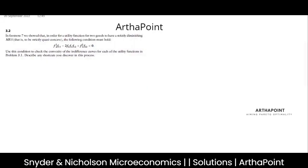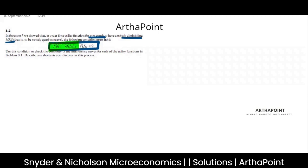This is question number two from Snyder and Nicholson, Chapter 3. In the footnote, it says that in order for a utility function of two goods to have strictly diminishing MRS, the following condition must hold. Use this condition to check the convexity of the indifference curve for each of the utility functions described in problem 3.1, and describe any shortcuts you discovered in this process.